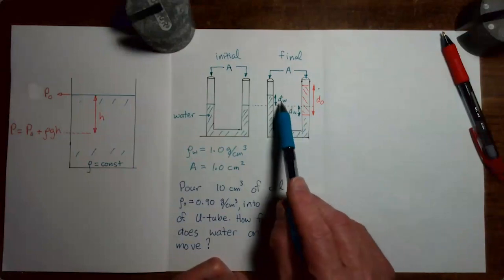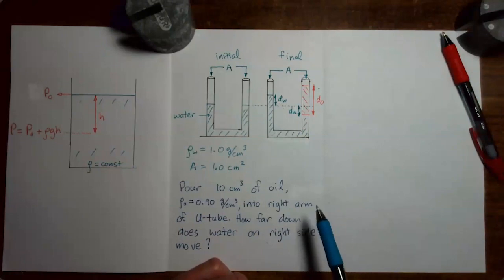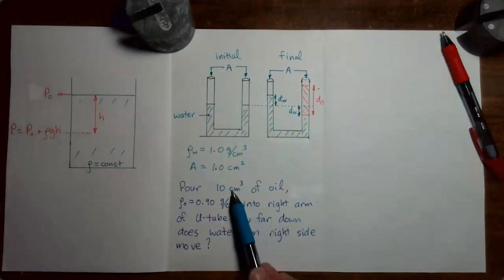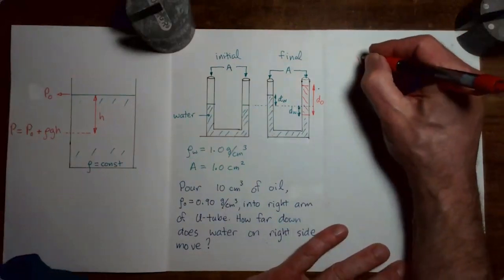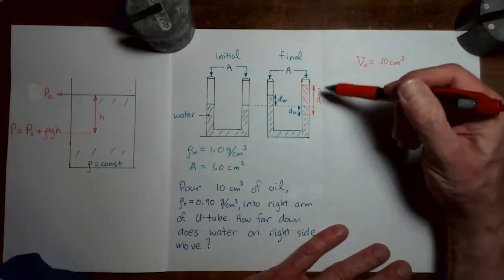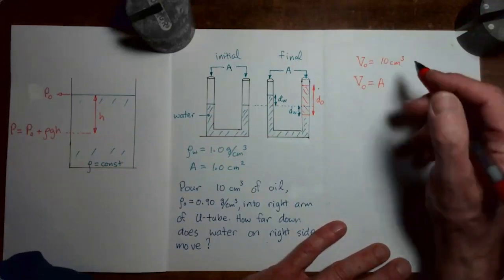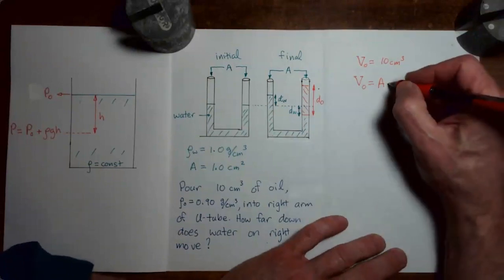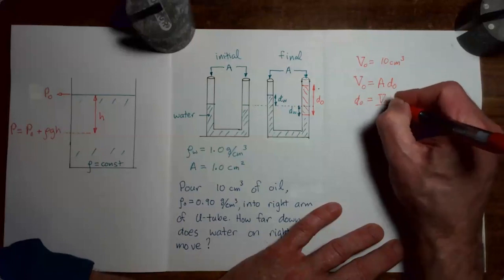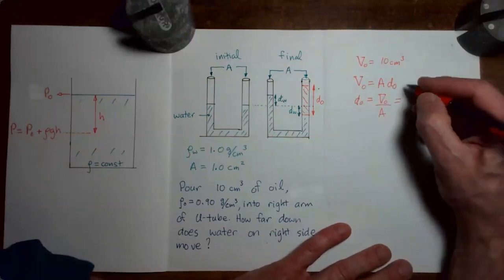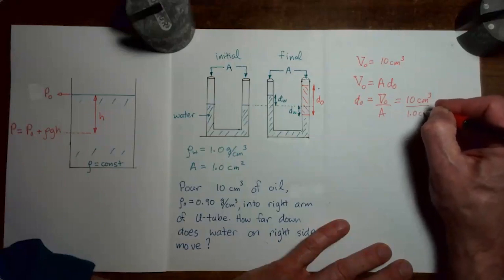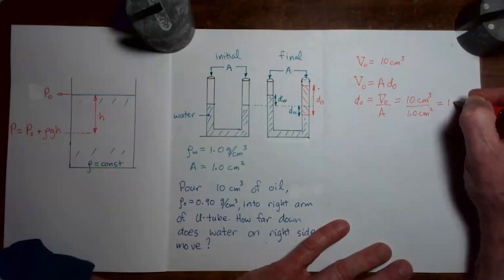What we're trying to find is D sub W. But first, let's figure out the height of the oil column D sub O. The volume of the oil V_O is 10 cubic centimeters. The volume of the column equals the cross-sectional area times the height, so the height of the oil column equals the volume divided by the area: 10 cubic centimeters divided by 1 square centimeter, giving a height of 10 centimeters.